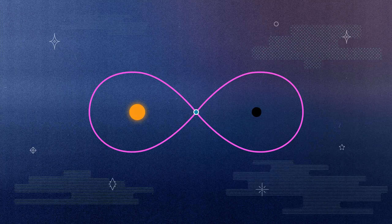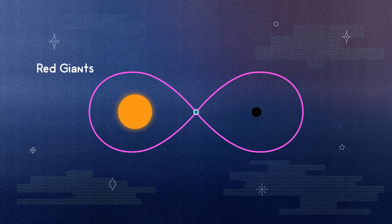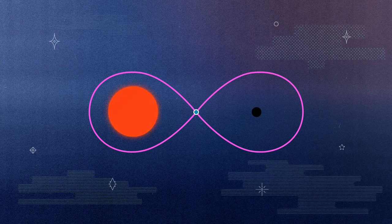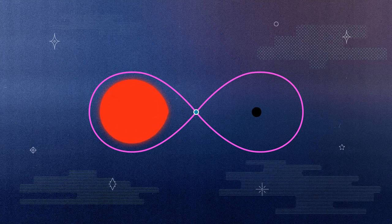The easiest way for this to happen is if the star begins to fill its Roche lobe. As stars like our sun get older, they will swell up to become red giants. At this time, the star can grow to fill its Roche lobe.